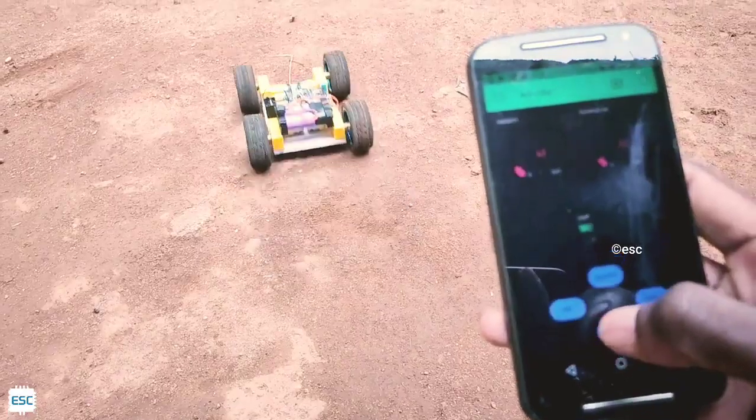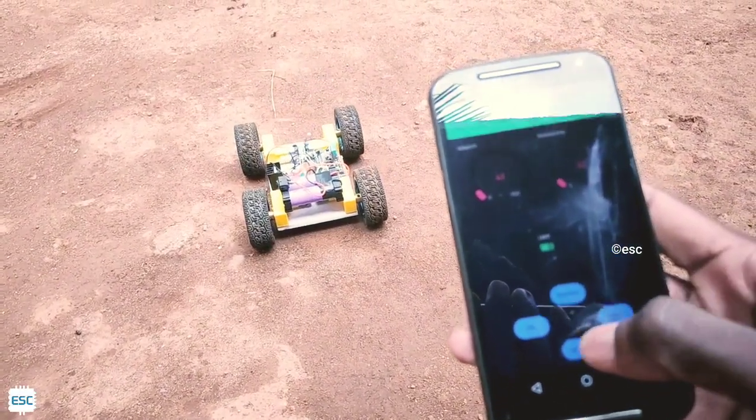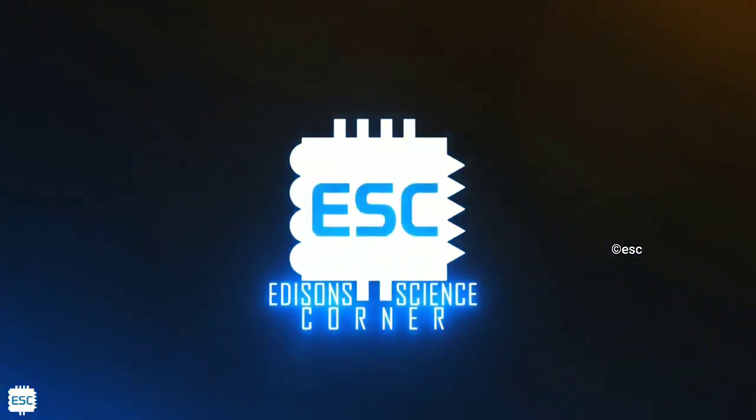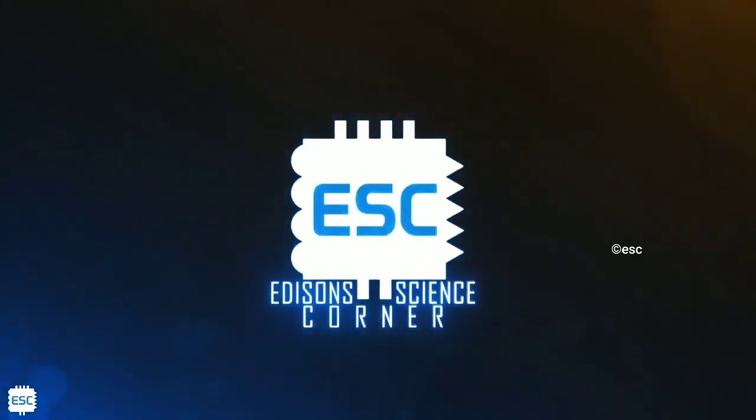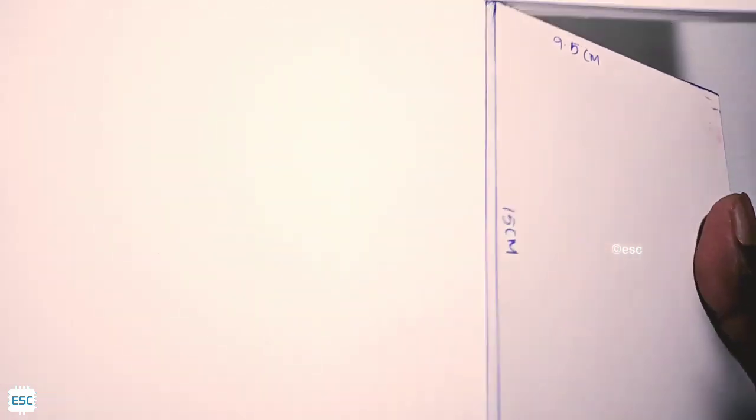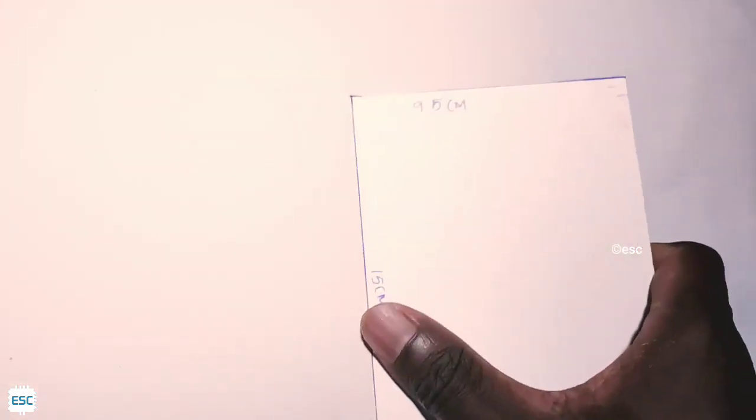This is a college project, so without wasting any more time let's get started. First, let's build the chassis of the robot. I am using 5mm multi-wood for this. You can use the same or you can use any plastic body.